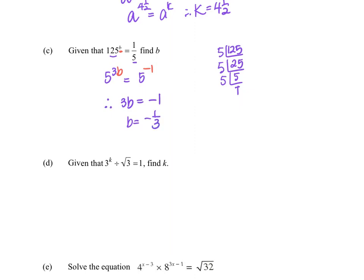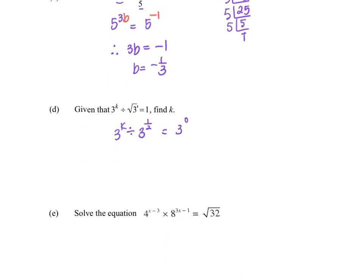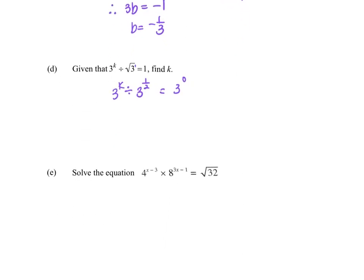Part D: 3 to the power of k equals 3 divided by square root of 3. Square root divides the power by 2, so square root of 3 is 3 to the power of 1 over 2. And 3 to the power of 0 gives you 1. When we have division, the powers subtract each other, so we get 3 to the power of k minus half equals 3 to the power of 0. Therefore k minus half equals 0, so k equals half.